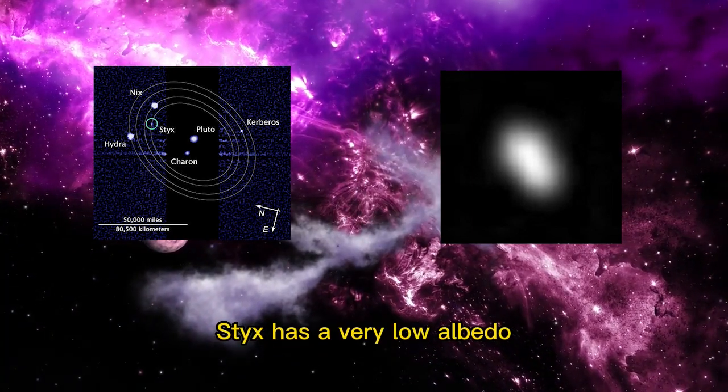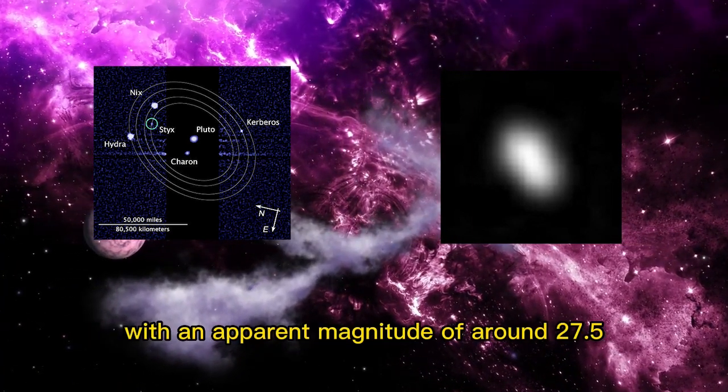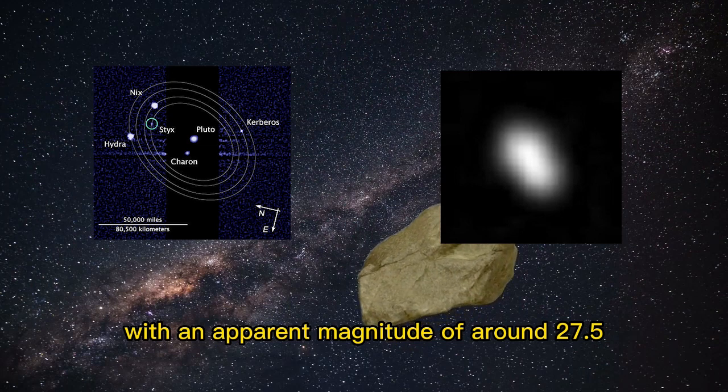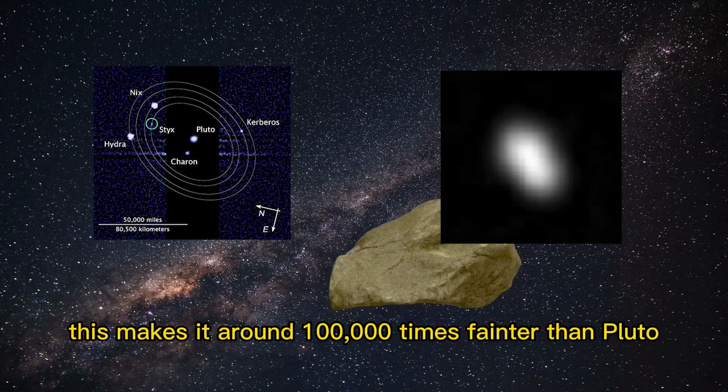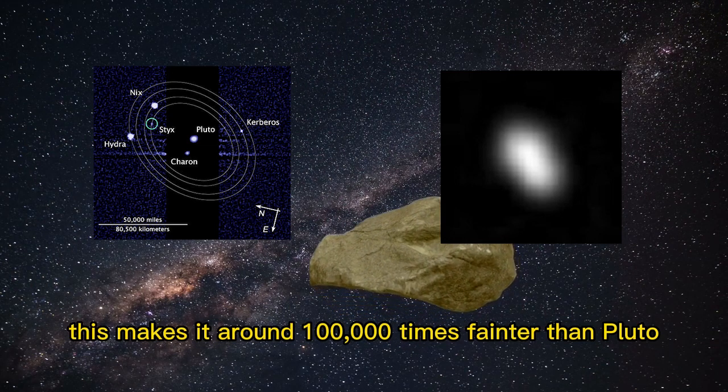Styx has a very low albedo and appears very faint when viewed from Earth, with an apparent magnitude of around 27.5. This makes it around 100,000 times fainter than Pluto.